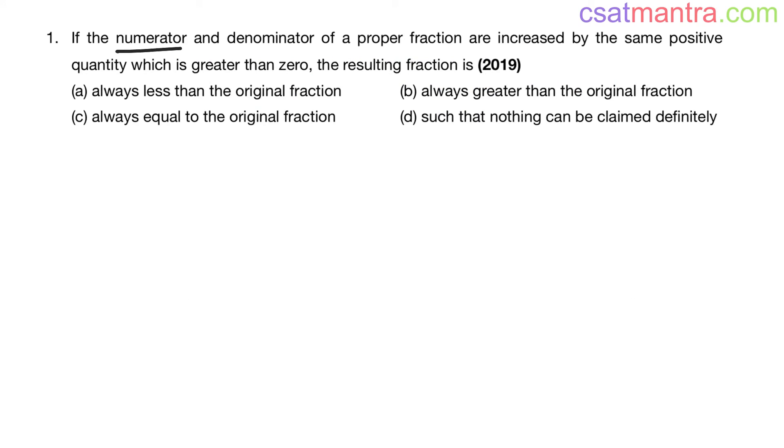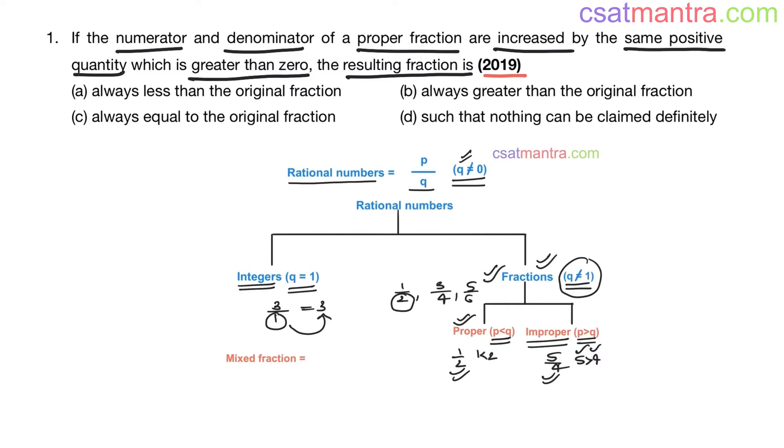If the numerator and denominator of a proper fraction are increased by the same positive quantity which is greater than zero, the resulting fraction is. This question is asked in 2019 from ratios and proportions chapter. This question is directly from our lectures. In number system chapter, types of numbers lecture, we have seen what a proper fraction is.